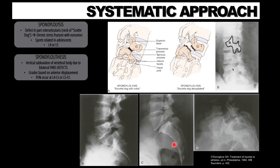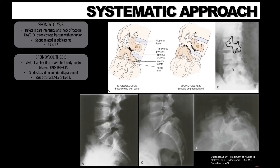A grade three spondylolisthesis shows more extensive slipping of the L5 vertebrae combined with wide separation at the arch defect, as well as degenerative changes of the disc — this is going to be grossly symptomatic. A grade four classification means the vertebrae has slipped forward more than halfway the overall width, resulting in severe disability due to impingement of the spinal canal contents. 95% of spondylolisthesis occurs at the L4-L5 or L5-S1 vertebral level.